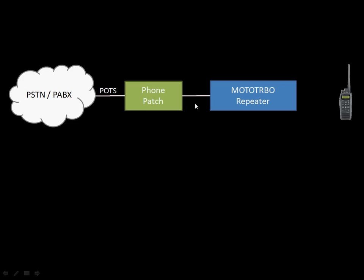To grant the radio user access to the phone line, the phone patch requires an access code — similar to a secret PIN on analog systems, preventing unauthorized users from accessing phone privileges. The radio dials this access code, which causes the phone patch to connect through to the phone line and the call proceeds. When finished, the radio ends the call by pressing a button or by sending a deaccess code, which tells the phone patch to terminate the call and drop the line.